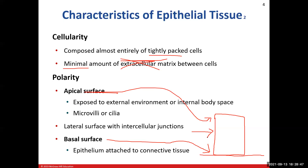Most of the time on the lateral surface, cells are connecting to one another with very tight junctions so nothing can get in between the cells. There are times we don't want things getting between cells — like infection. We don't want viruses, parasites, or bacteria squeezing in. On the apical surface, we learned in chapter four there can be modifications: microvilli or cilia. Cilia have to do with movement; microvilli increase cell surface area for absorption.